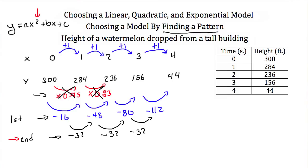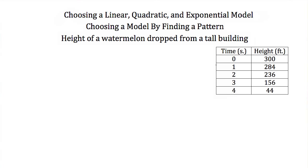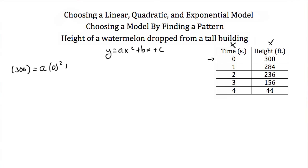Now we can solve for this quadratic model. We'll use several points and plug them into y = ax² + bx + c to solve for a, b, and c. First I'll plug in x = 0, y = 300. That gives us 300 = a(0)² + b(0) + c. Since 0 squared times a is 0 and b times 0 is 0, we get c = 300.